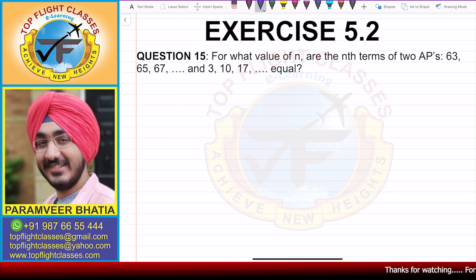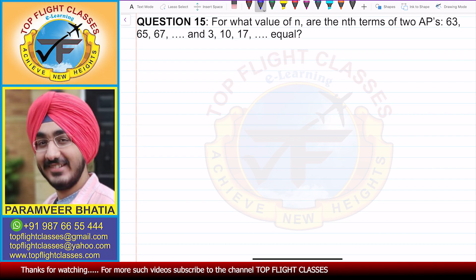we are going to solve question number 15 of exercise 5.2. Question number 15 says: for what value of n are the nth terms of two APs 63, 65, 67 and so on, and 3, 10, 17 and so on equal? Now let's solve this question.